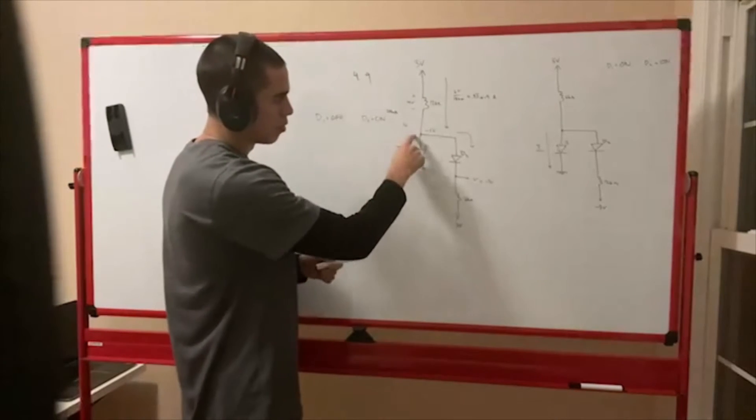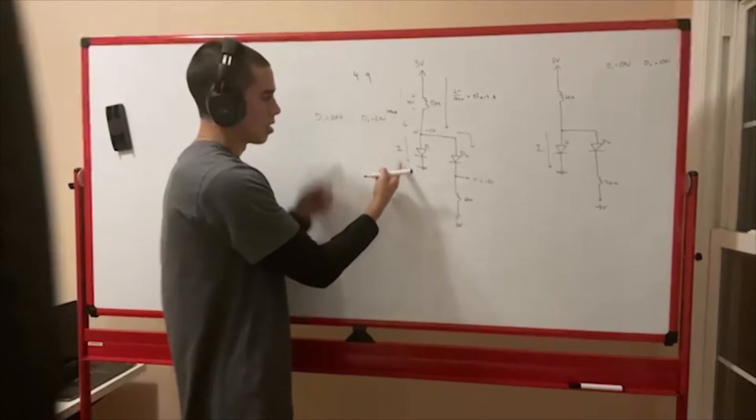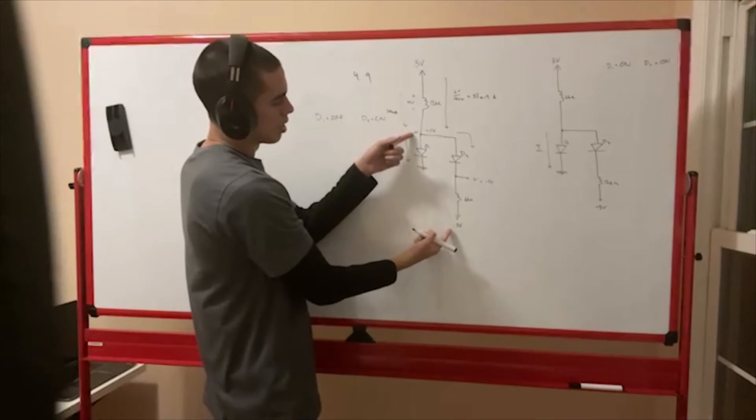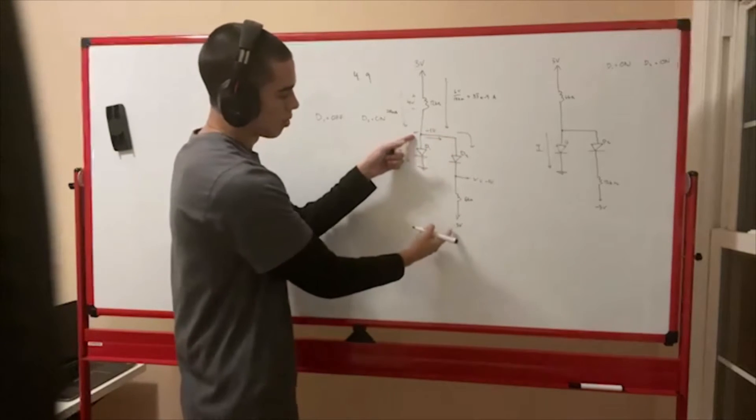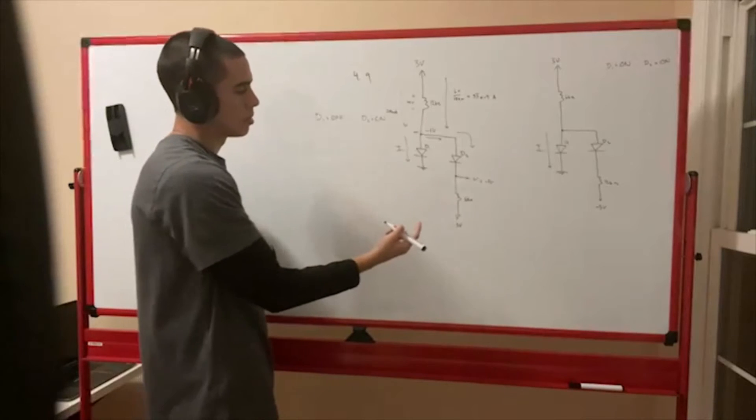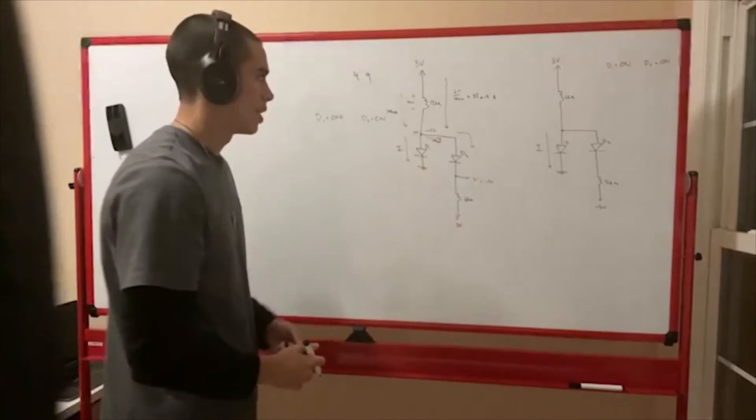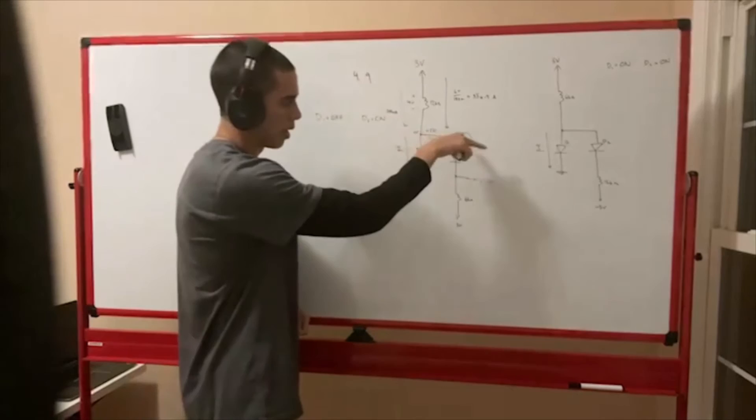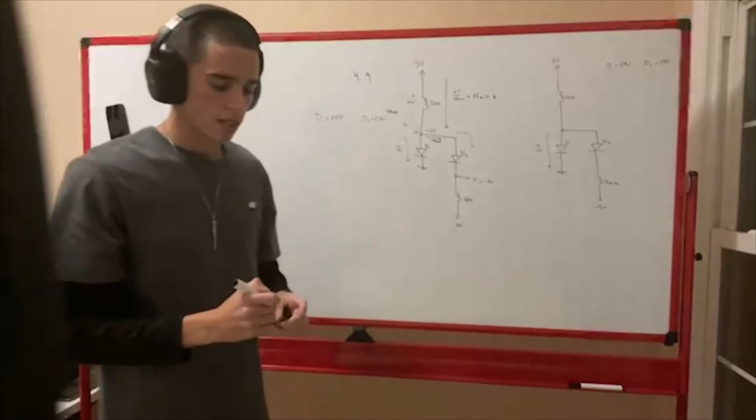And then if you look at from 0 volts here, like in the case where we're short and this is on, if this was 0 volts, then we'd have another current going this way. From 0 to 3 divided by 6 kilo ohms, that gives you 500 micro amps. And that wouldn't line up, because if you have 250 micro amps in, 500 micro amps out, you need 250 micro amps in. But that would be wrong.